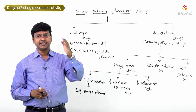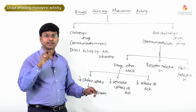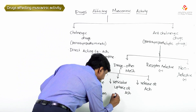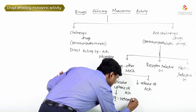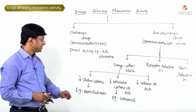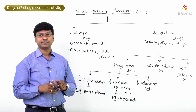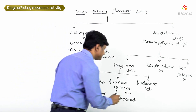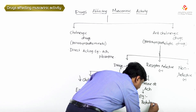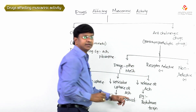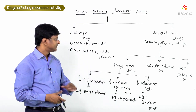Once acetylcholine is formed, it is normally taken up into vesicles within the parasympathetic nerve. The drug that inhibits this vesicular uptake is vesamicol. The drug that decreases the release of acetylcholine from the cholinergic nerve is botulinum toxin.